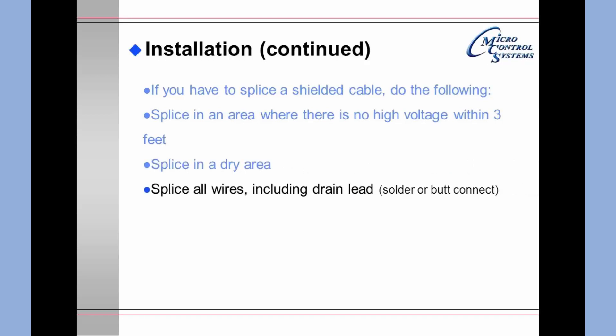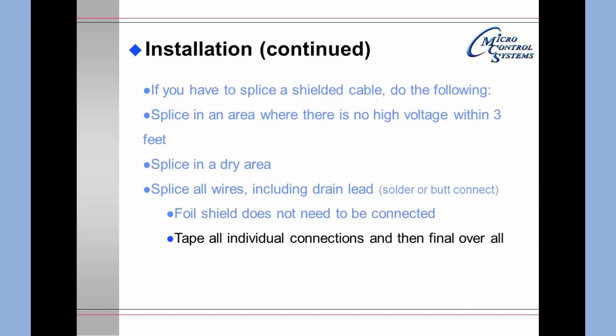Splice in a dry area. Splice all wires including the drain lead. You may solder or butt connect the connections. If you are going to use butt connectors, stagger the wiring so that all of them do not end up in exactly the same spot. The foil shield does not need to be connected. You will tape all individual connections and then tape over the final splice.